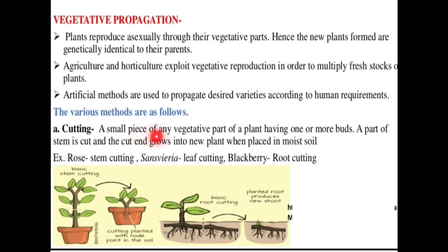A small piece of any vegetative part of a plant having one or more buds — such as a part of stem, root, or leaves — is cut and grown into a new plant; this is called cutting. There are three types of cutting: stem cutting, leaf cutting, and root cutting. Stem cutting is mostly used in rose, leaf cutting in Sansevieria, and root cutting in blackberry.